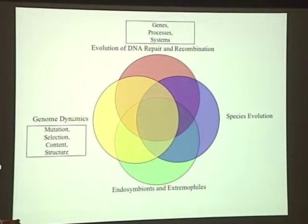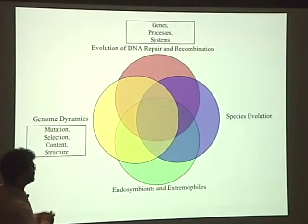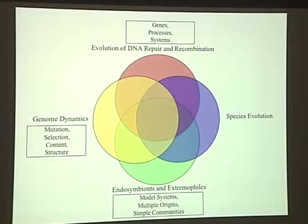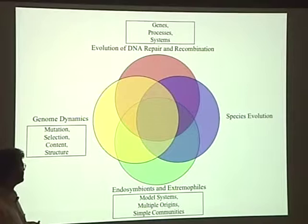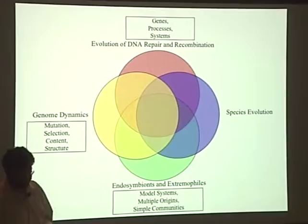We're interested in genome dynamics themselves — how have genomes changed over time, how has the content changed, how has the structure changed — and we're trying to connect that to our studies of evolution of DNA repair and recombination. We have a couple of model systems that we think are very useful for studying the mechanisms of microbial diversification, and those are endosymbionts and extremophiles.